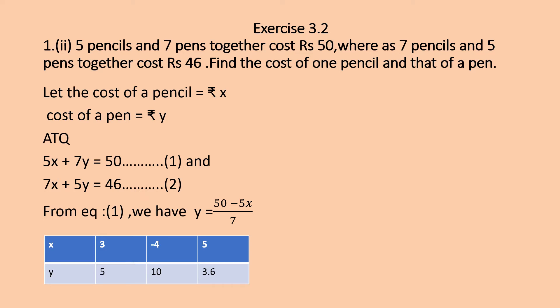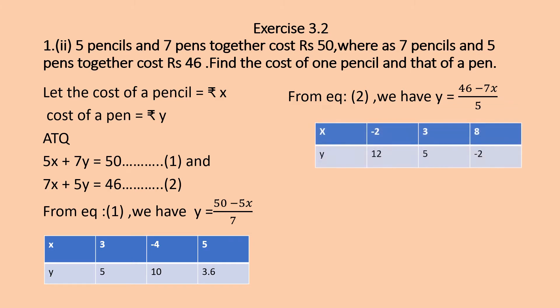From Equation 2, y = (46 − 7x) / 5. Select values of x so that at least 2 solutions give whole numbers, making plotting easier. When x = −2, y = 12; when x = 3, y = 5; when x = 8, y = −2. So we have found 3 solutions for each equation and now need to plot the graph.